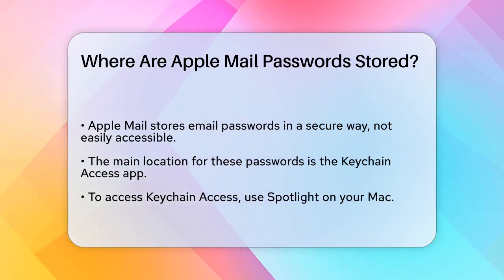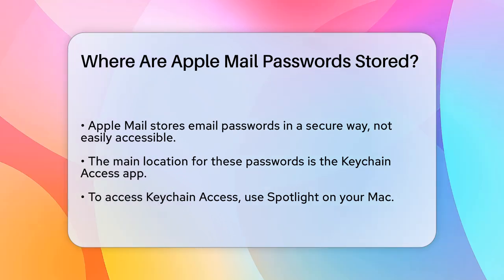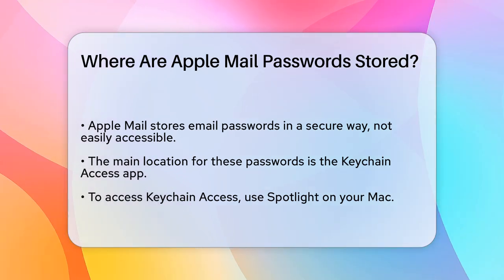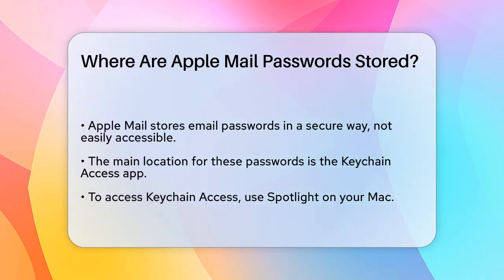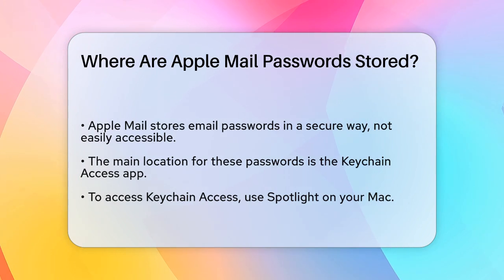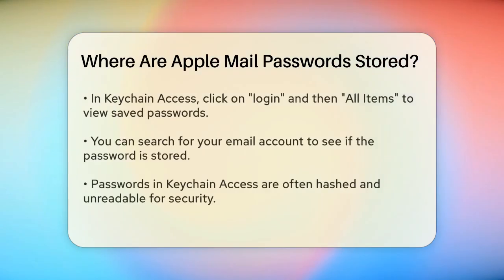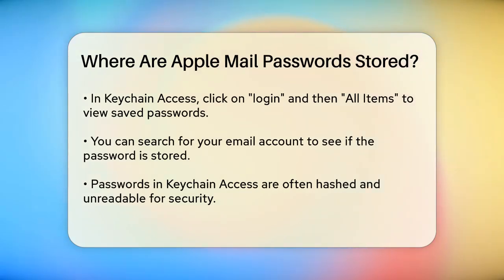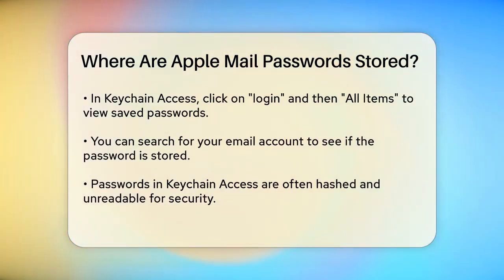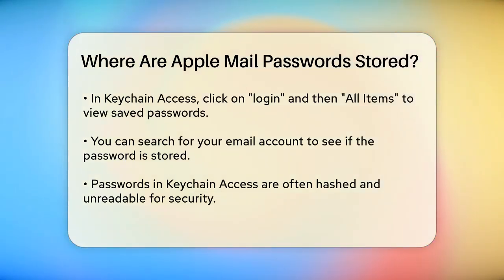To find it, you can use Spotlight on your Mac. Once you open Keychain Access, you'll see a list of all the saved passwords and other secure information. Open Keychain Access using Spotlight. In the left column, click on Login, and then select All Items at the top. Search for your email account in the list. If the password is stored, you'll see it listed here.